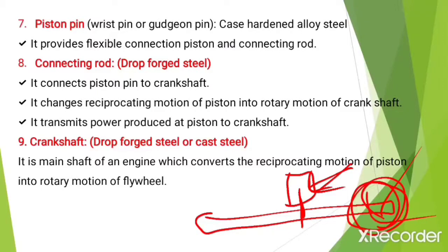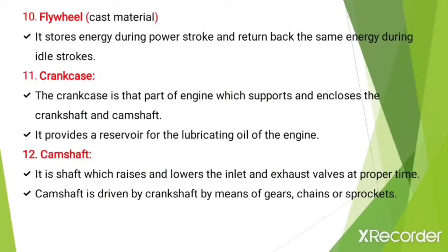The crankshaft is made up of drop-forged steel or cast steel. It is the main shaft of the engine, which converts the reciprocating motion of the piston into the rotary motion of the flywheel. The flywheel is made up of cast iron and stores energy during the power stroke, returning it during the idle strokes. Idle strokes are those strokes which do not produce power — these are the compression stroke, exhaust stroke, and suction stroke.